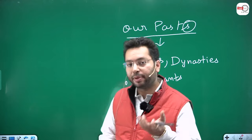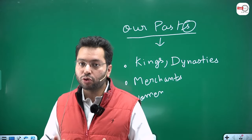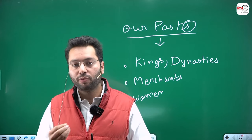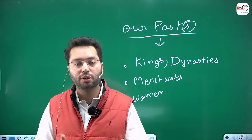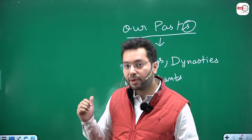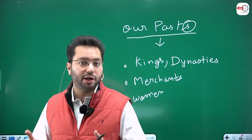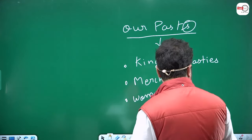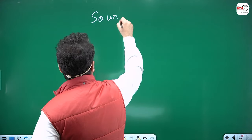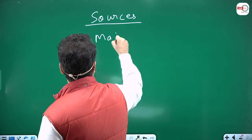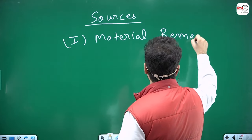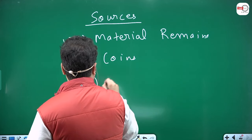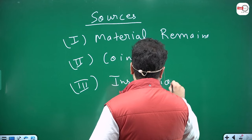To understand the society's past, we need to know which types of sources help us. If you want to understand your own past two years ago, you could read your WhatsApp chat, your Instagram account, or your diary. Similarly, for understanding the whole society's past, broadly speaking, we rely on four sources: material remains, coins, inscriptions, and manuscripts.